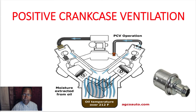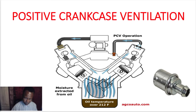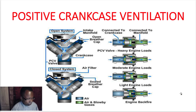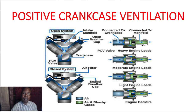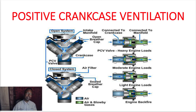Here's the PCV valve right here. Maximum flow is at cruise speed — at cruise we get the maximum airflow through the crankcase. At backfire, the valve is closed. At light engine loads it's starting to open up — you can see the air going by and here's the plunger. At moderate engine loads you get maximum flow, which is cruise speeds. At heavy acceleration the valve is closed. So maximum flow through this system is at cruise speeds.